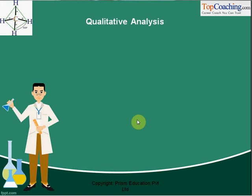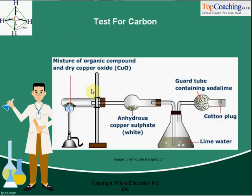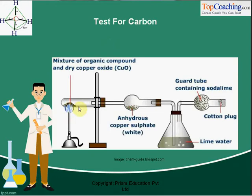Hello friends, welcome to topcoaching.com. Today we are here to discuss qualitative analysis of organic compounds. The very first test is the test for carbon. Many students ask why, when we are studying organic chemistry, do we need to test for carbon. When we are presented with a compound in the lab, the first thing we want to prove is that it is an organic compound, and hence the test for carbon.